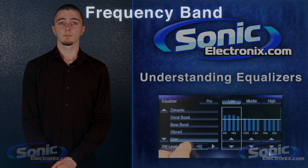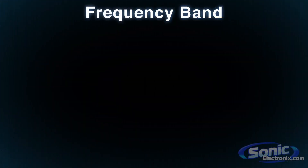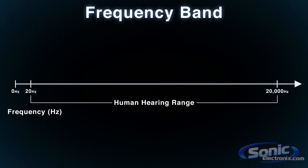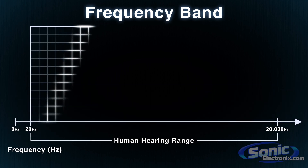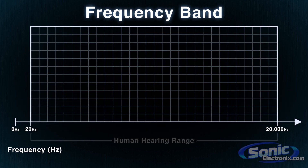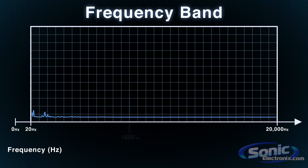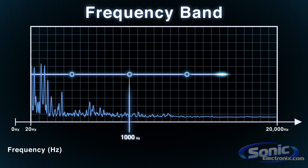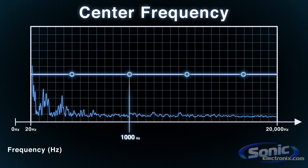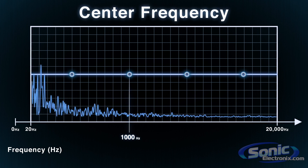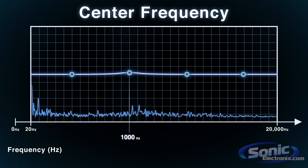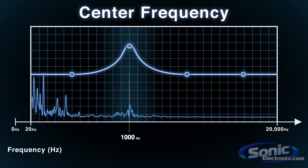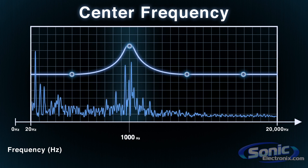To start, let's go over the basic terms of an equalizer. We've got frequency band, which is a specific chunk out of the human range of hearing. Most humans can hear between 20Hz and 20,000Hz. For example, the 1,000Hz mark in that range is a specific frequency band. Center frequency — as the name implies, this is the exact point on a frequency band that is being adjusted. It is called the center frequency because adjusting this will also affect the surrounding frequencies.